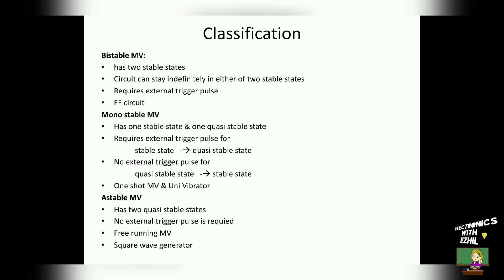Depending upon the number of stable states present in the multivibrator and the working of the multivibrators, we classify them into three categories: bistable multivibrator, monostable multivibrator, and astable multivibrator. The first one is bistable multivibrator. From the name itself we can understand that it has two stable states. This circuit can stay indefinitely in either of the two stable states and requires an external trigger pulse to change its state from one stable state to another. This circuit is also called as flip-flop circuit.